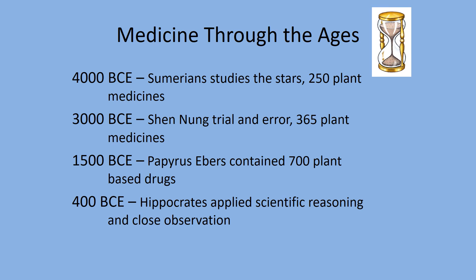Medicine through the ages: 400 BCE — BCE is before the current era. In that first human civilization settlement, about 250 drugs were used. Then China, 365. Don't get bogged down with specific dates and numbers — just know that they continually increase. In Egypt, the Papyrus Ebers was a collection of works with 700 plant-based drugs listed. Then almost 1,100 years after that, we have Hippocrates and his careful observation leading to the scientific method.